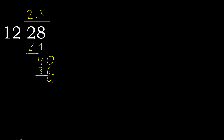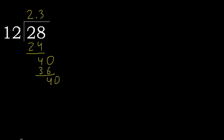Subtract. Complete. Place the point here. 40: 12 multiplied by 4 is greater, so multiplied by 3 gives 36. Subtract — complete. The remainder repeats.